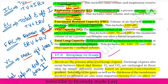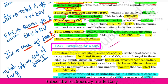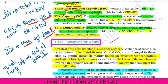Next, vital capacity — the maximum amount of air you can breathe, measured after forceful expiration followed by maximum forceful inspiration. And total lung capacity is the total volume of air in the lungs after forceful maximum inspiration.